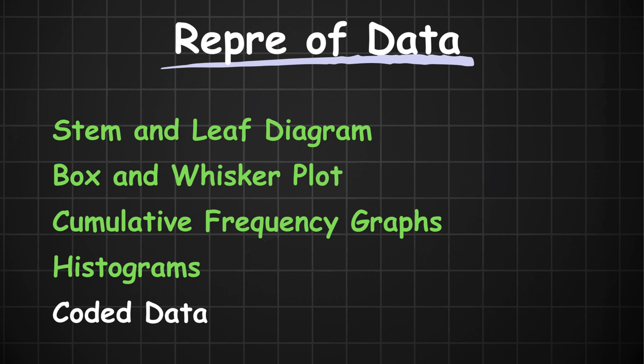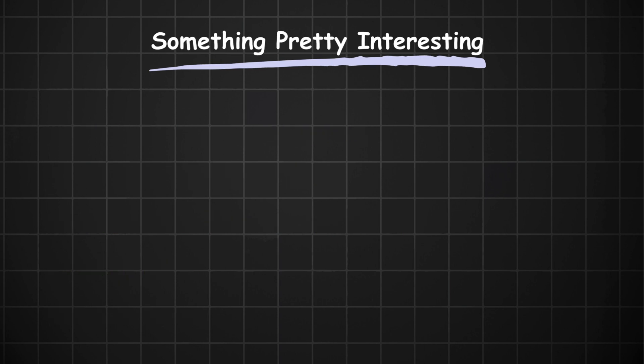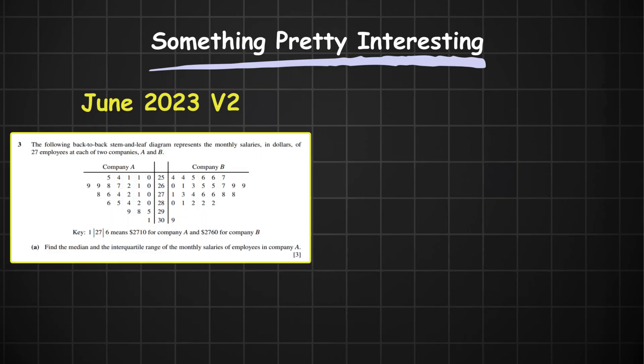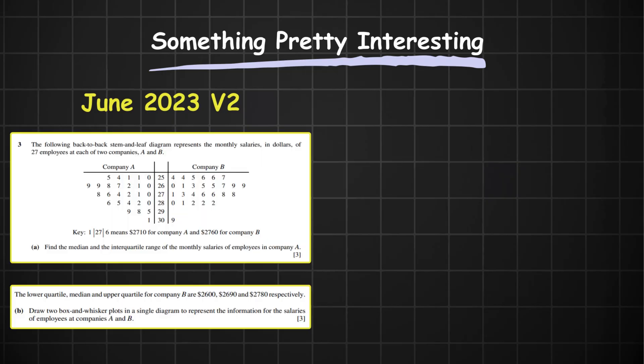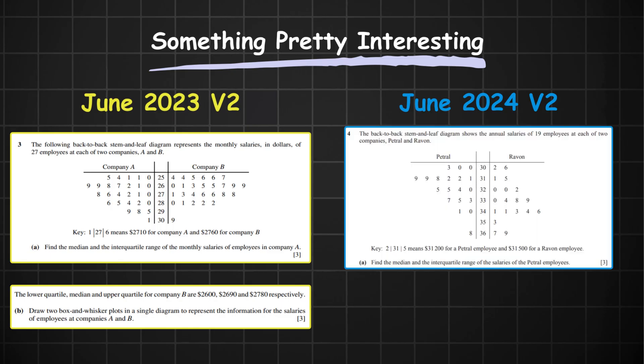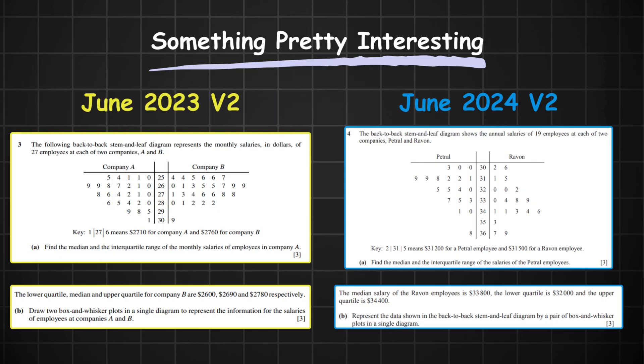If we look at the data, you notice something pretty interesting. In the June 2023 variant 2 paper, we got a stem and leaf plot that led into a box and whisker plot. And I don't know if this is a coincidence, but in the same paper, in June 2024, we got the exact same question. A stem and leaf plot that led to a box and whisker plot. But these are June papers. So you'd think, this information isn't useful to us.